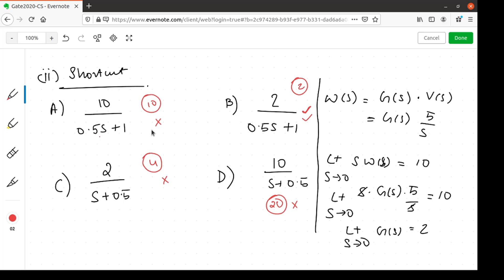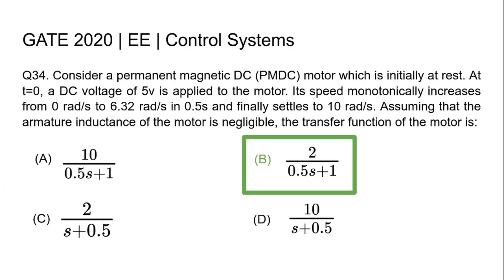So, without actually solving for the question directly, we can solve it like this. Looking back at the options, we find that the correct option is option b: 2 by 0.5s plus 1. Thank you.